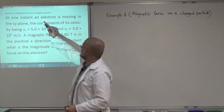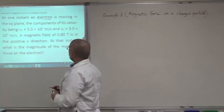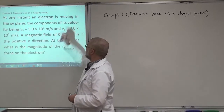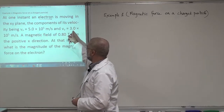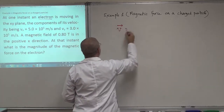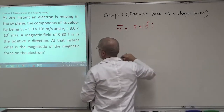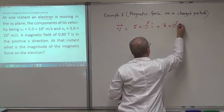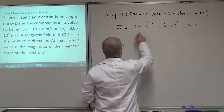It says at one instant, an electron — it's important to know what is the charge — an electron is moving in the x-y plane. The component of its velocity being Vx equals 5×10⁵ meters per second and Vy is 3×10⁵ meters per second. So if I want to write its velocity as a vector, I have to write the component 5×10⁵ î plus 3×10⁵ ĵ meters per second.